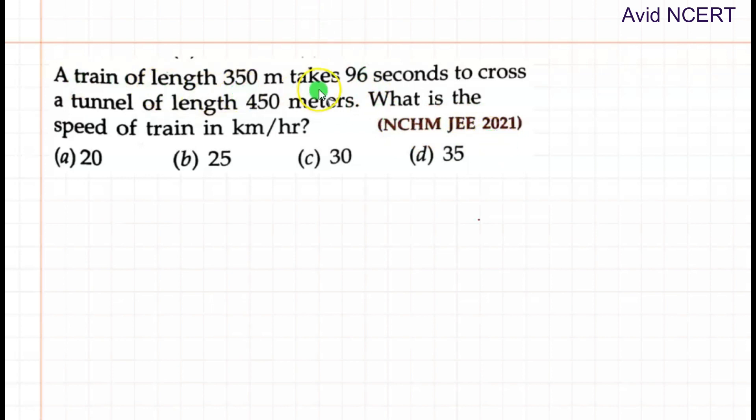A train of length 350 meters takes 96 seconds to cross a tunnel of length 450 meters. What is the speed of the train in kilometers per hour?